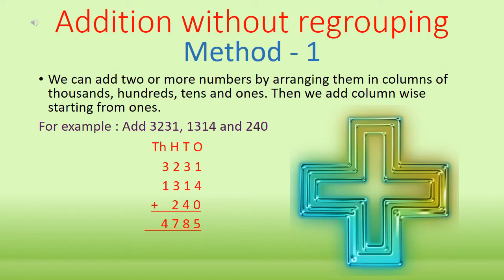Yesterday we learned addition without regrouping, and for this we learned two methods. The first method is: we can add two or more numbers by arranging them in columns — columns of thousands, hundreds, tens, and ones. Then we add each column starting from ones. Let's understand it with the help of an example. Let's add 3,231, 1,314, and 240.